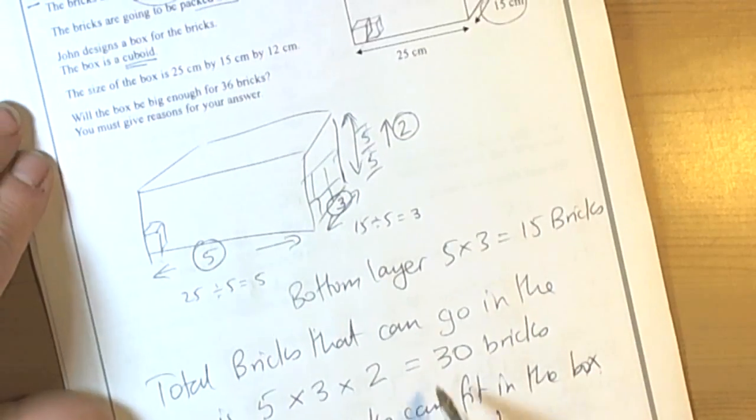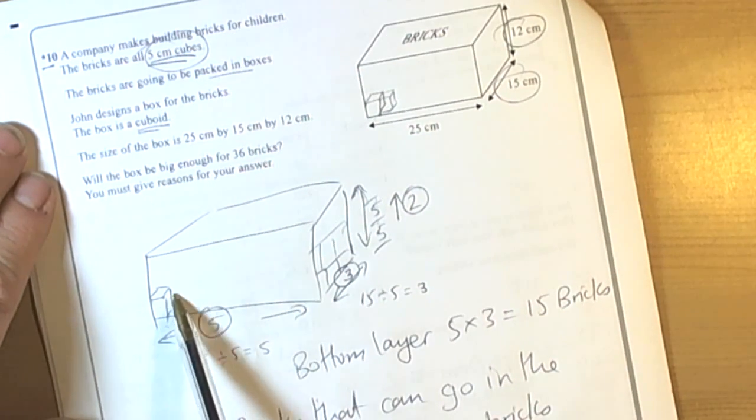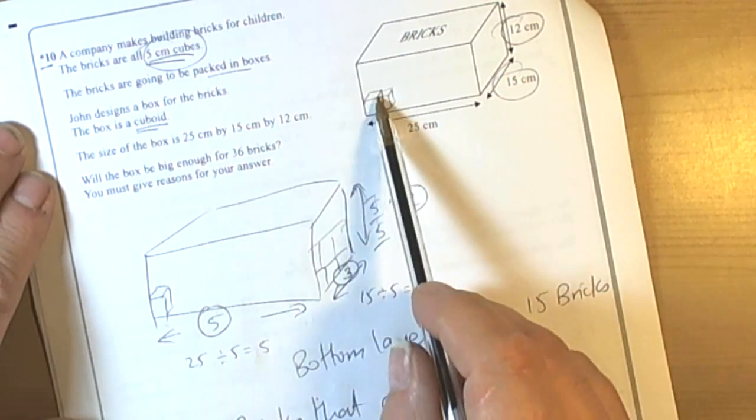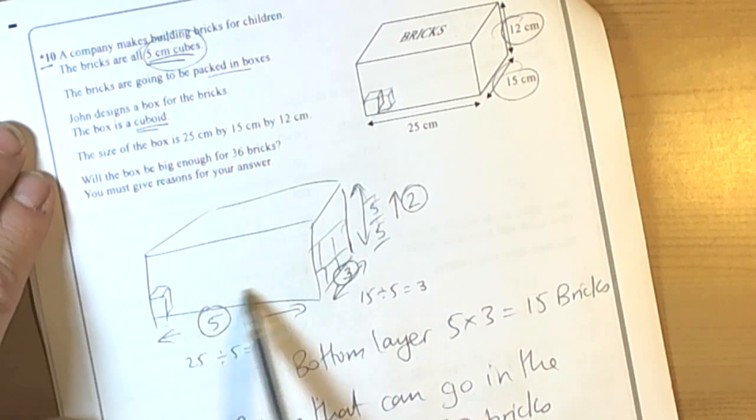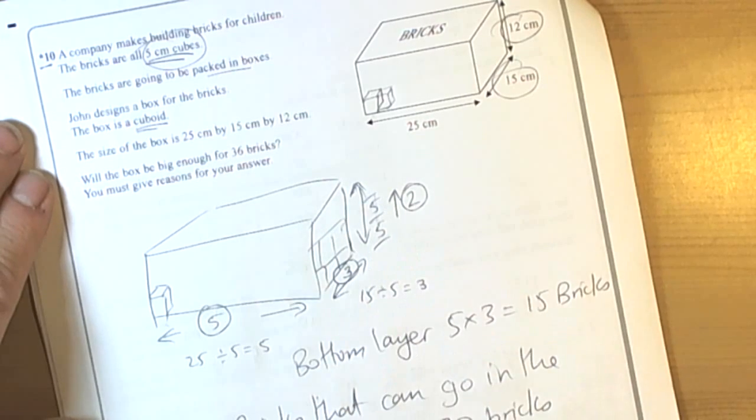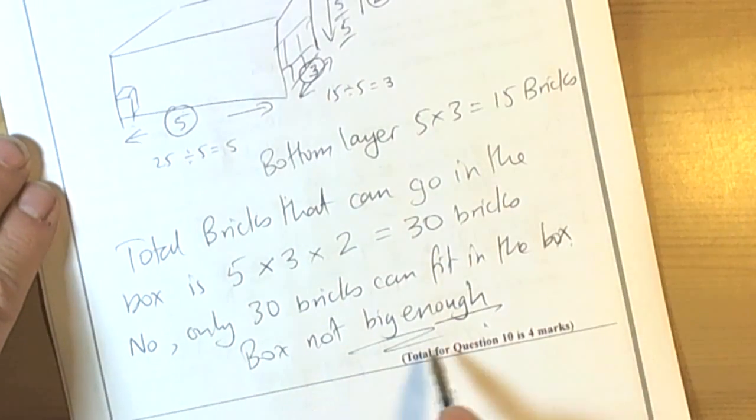So a classic kind of box star question, where if you calculate how many of the little boxes will fit along the side lengths, that's usually a quicker way than trying to work out volumes. In this particular question, we've concluded the box isn't big enough.